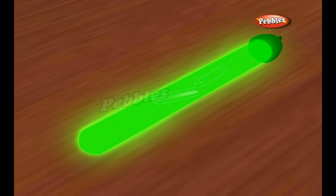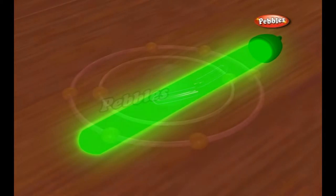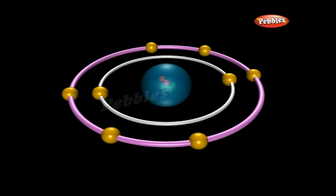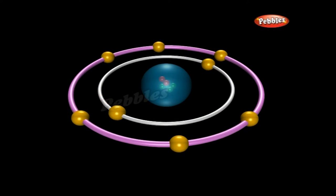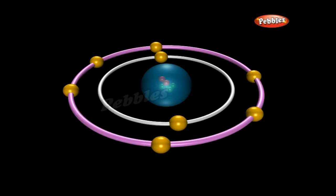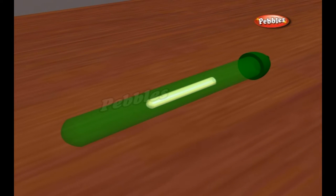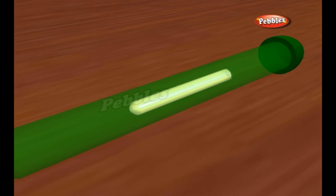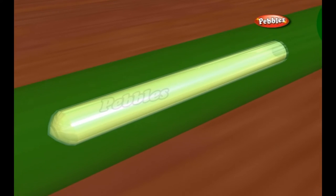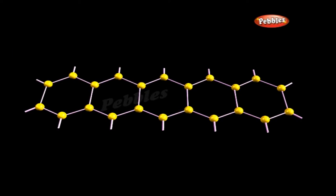Laser generation. All these processes work on the same basic principle: an outside source of energy excites atoms, causing them to release particles of light called photons. A lightstick does the same basic thing, but it uses a chemical reaction to excite the atoms in a material.